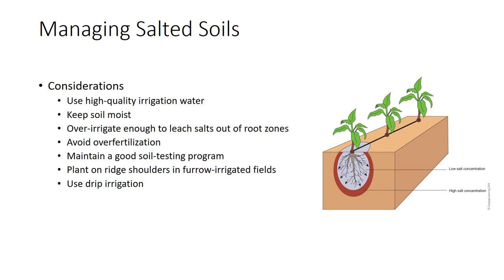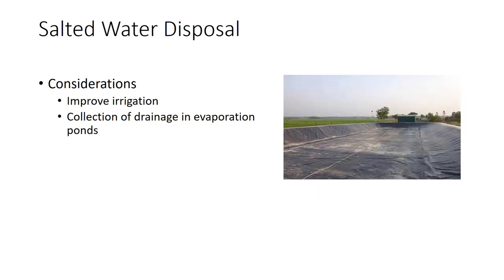Plant on ridge shoulders in furrow-irrigated fields. Salts tend to concentrate on the top of the ridge. Use drip irrigation — it tends to reduce salt stress because it keeps the soil uniformly moist and moves salts out of the root zone and into the soil between plants and rows, as seen in the figure. One difficulty with methods for reclaiming and managing salted soils is that they do not eliminate soluble salts but move them to another place. Salty drainage water appears in rivers downstream from affected farms, making that water even saltier. Individual growers do have some options to help reduce saline discharges from their fields. Improving irrigation efficiency and practicing minimum leaching are examples of practices that minimize the problem. Where necessary, collection of drainage water in evaporation ponds may be possible but expensive.